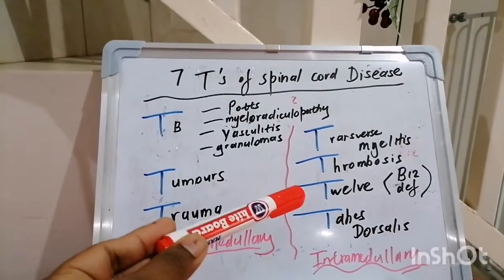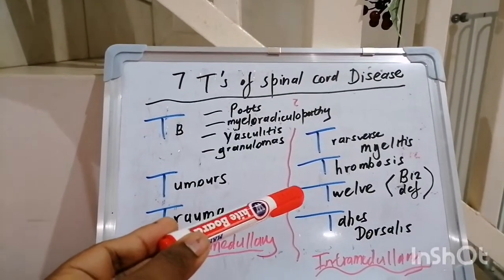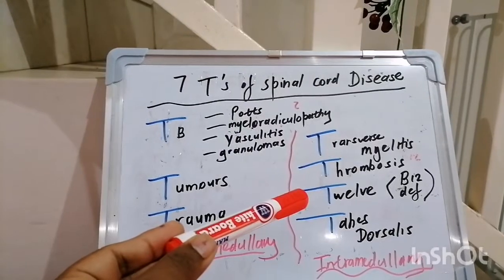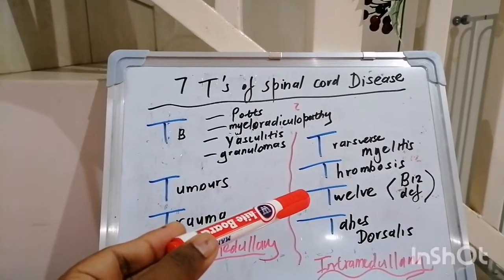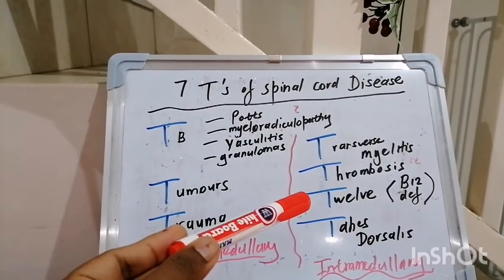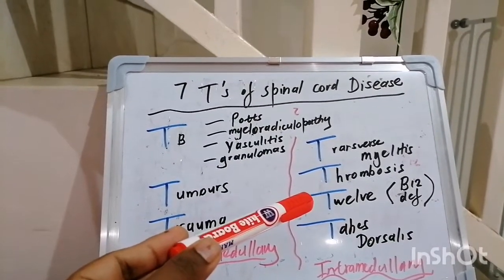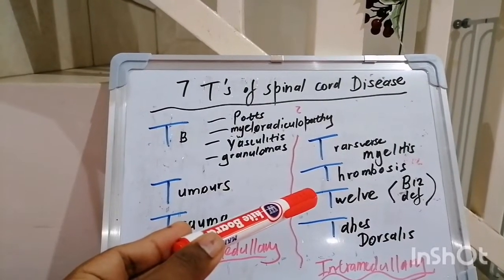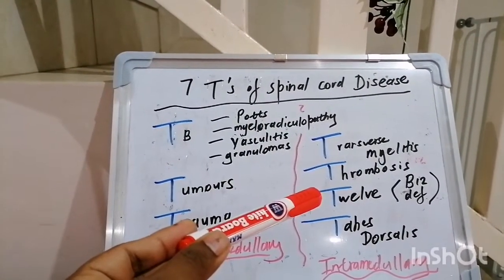As we spoke about previously, B12 deficiency gives you subacute combined degeneration of the spinal cord, which gives you two P's in the pod. The two P's basically stand for affectation of the pyramidal tract, the posterior columns, and peripheral neuropathy, with optic atrophy and dementia.